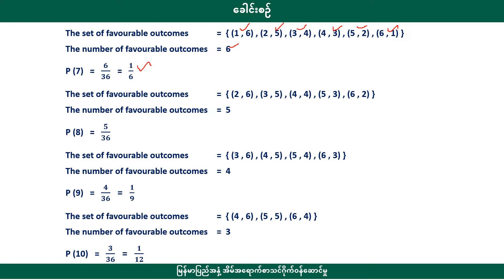Probability of 8 is 5 by 36: combinations 2+6, 3+5, 4+4, 5+3, 6+2. Probability of 9 is 4 by 36, or 1 by 9: combinations 3+6, 4+5, 5+4, 6+3.